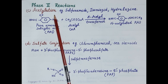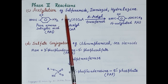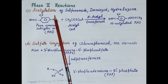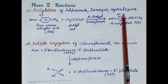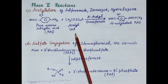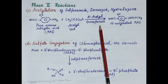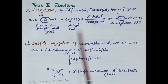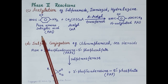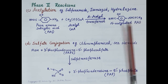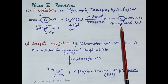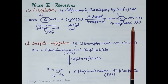The third type of conjugation reaction is acetylation. Drugs with an amino group are conjugated with the acetyl group — for example sulfonamide, isoniazid, and hydralazine. The acetyl group is donated by acetyl coenzyme A, and the reaction is mediated by the non-microsomal enzyme N-acetyltransferase. For example, para-amino salicylic acid with its amino group is acetylated to N-acetylated para-amino salicylic acid, which is excreted in the urine.